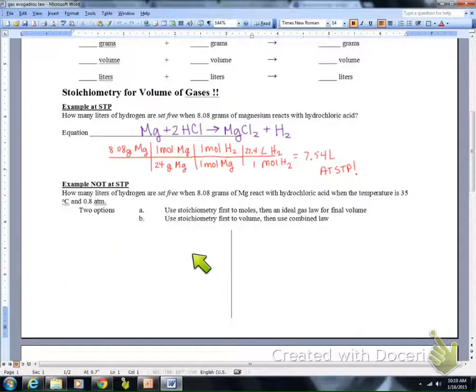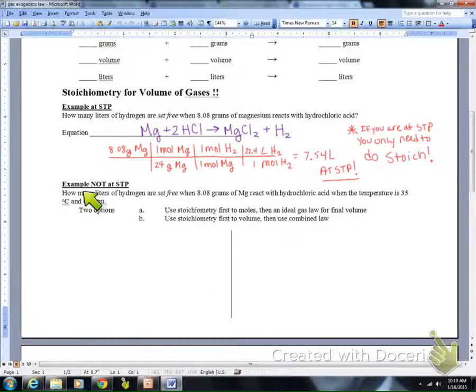On this side is going to be A, and on this side is going to be B. I'm going to color code them for you. We're going to use stoichiometry first to moles and then the ideal gas law for the final volume. Just a reminder, if you're at STP, you only need to do stoichiometry. Because we're not at STP, we're going to have to do two things. We're going to do stoichiometry and the ideal gas law, or stoichiometry and the combined gas law.